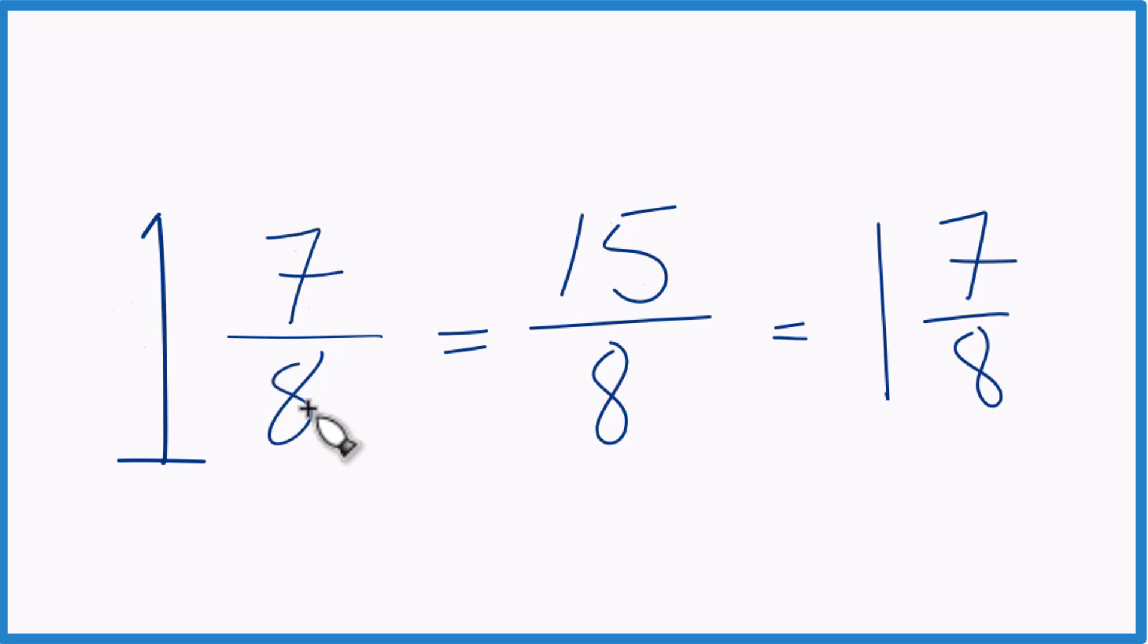The mixed number 1 and 7 eighths equals 15 eighths. They have the same value, just represented differently here. That's it.